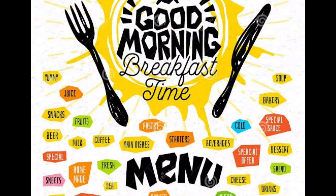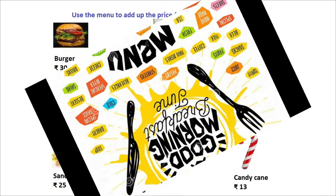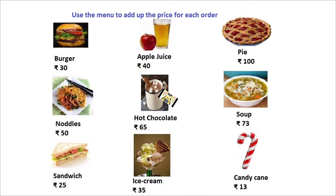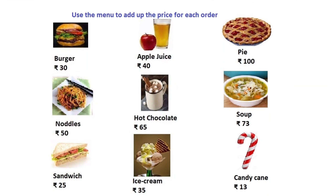Hello, a very good morning to all my dear students. Today I will take you to a restaurant for breakfast. Here is the menu card of the restaurant: burger 30 rupees, apple juice 40 rupees, pie 100 rupees, noodles 50 rupees.